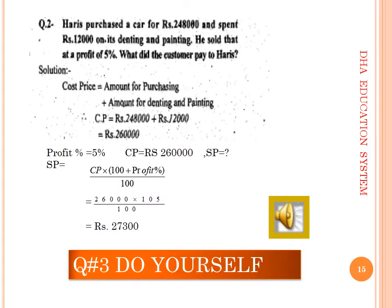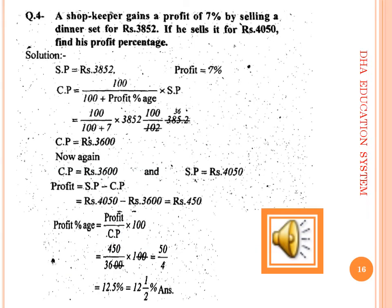Question 2: Harris purchased a car for rupees 248,000 and spent rupees 12,000 on denting and painting, then sold it at a profit of 5 percent. The total cost price is rupees 260,000. Apply the formula: SP = CP into (100 plus profit percent) over 100. Since CP and profit percent are given, put in the values to get the final selling price — that is what the customer paid to Harris.